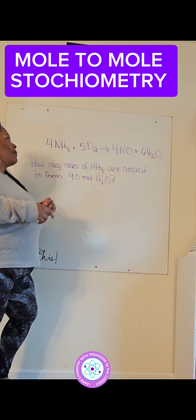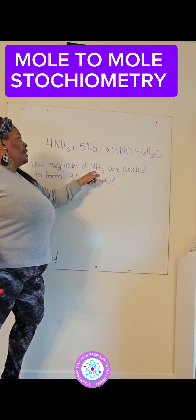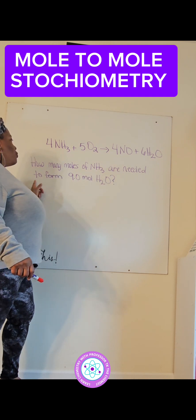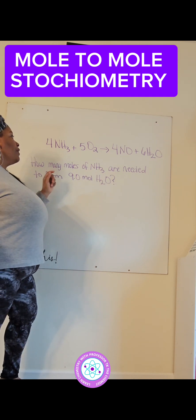So here we have a problem. We have a balanced equation right here on the board, and it says how many moles of NH3 are needed to form 9.0 moles of water.